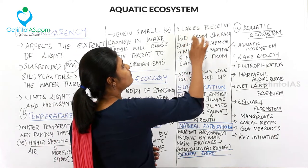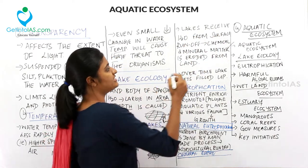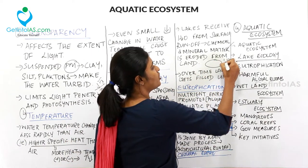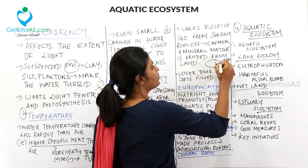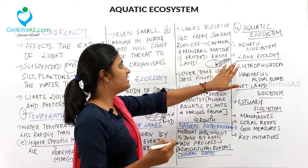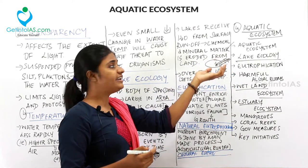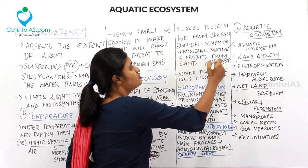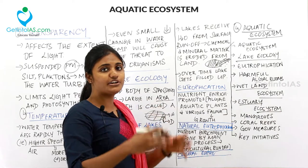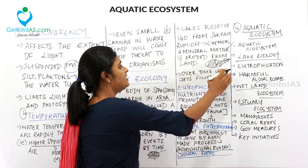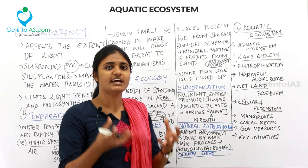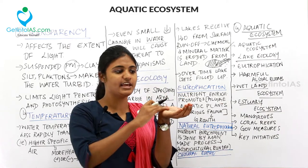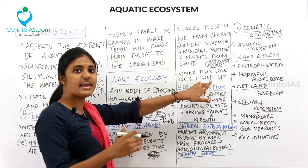Lakes receive water from surface runoff. When rain or precipitation occurs, water from the land carries chemical and mineral matter into the lake, depositing it inside over time. This process keeps continuing, and the lake gradually gets filled up with deposits. That is called the aging of the lake.